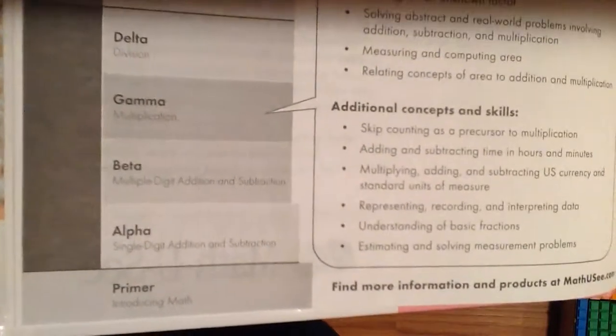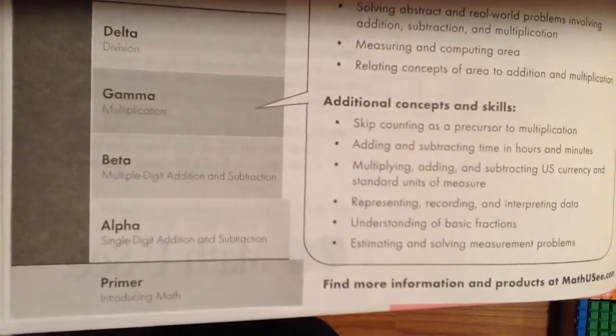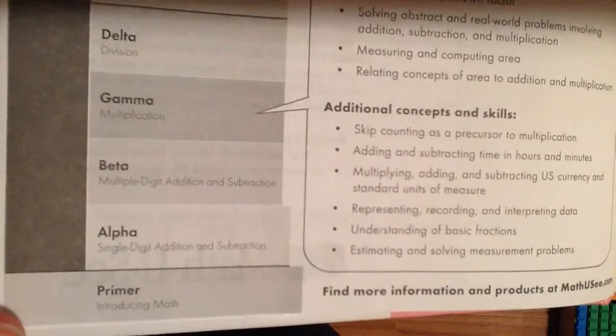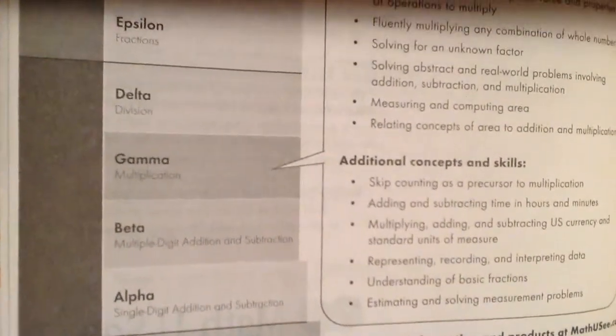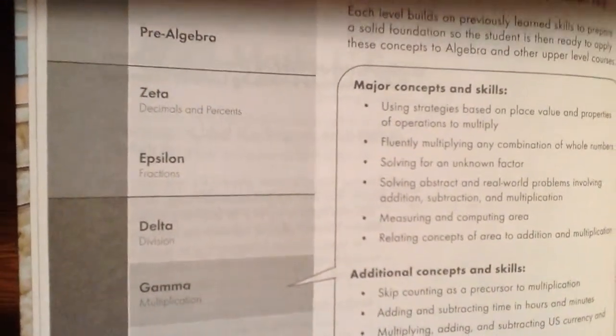When you move up to Beta, you'll be working on multiple digit adding and subtracting. Gamma: multiplication. Delta: division. Epsilon: fractions. Zeta: decimals and percents, and then on up to your middle school and high school courses.